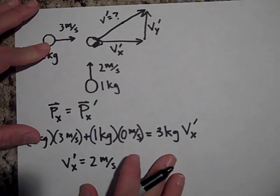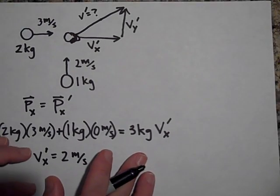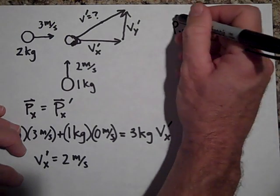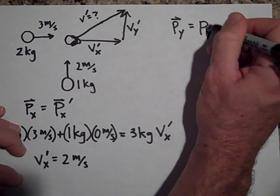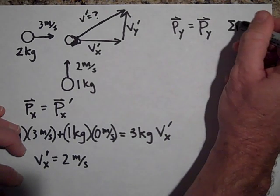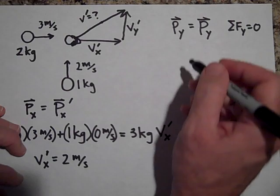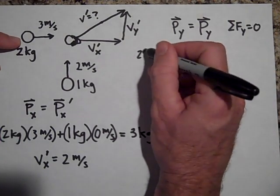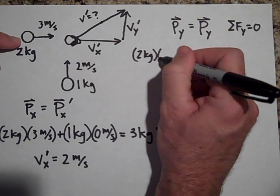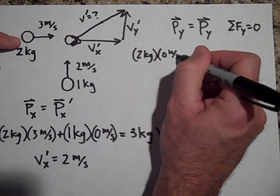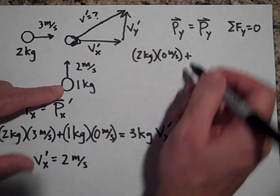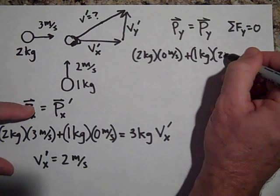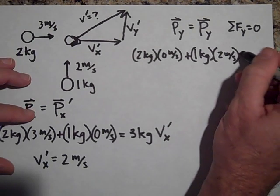Now let's do the same thing in the y-direction. The momentum in the y-direction before equals the momentum in the y-direction after, because the net force in the y-direction equals zero. The two-kilogram blob has no velocity in the y-direction. Plus one kilogram — and all of its velocity is in the y-direction — so two meters per second.